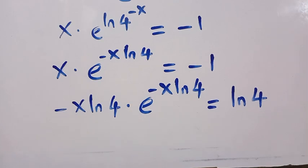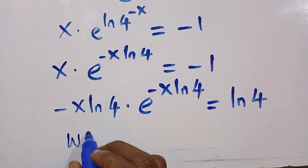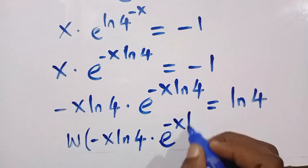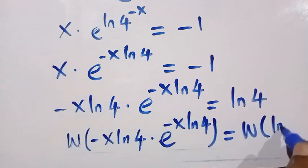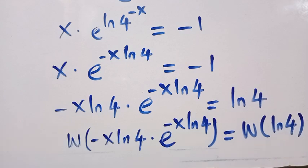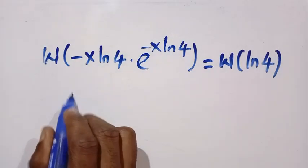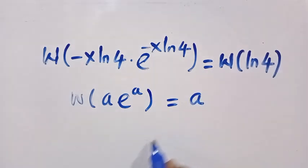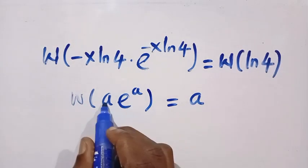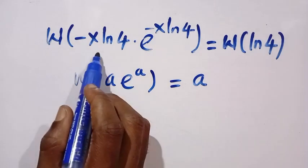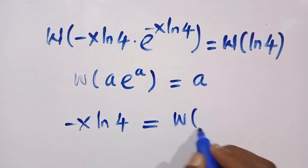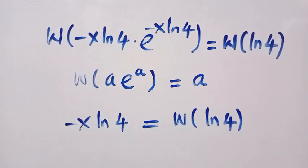Now we apply the Lambert W function to both sides: W of (minus x·ln 4). Using the identity W(a·e^a) = a, where the coefficient and the exponent must be the same, we identify a = minus x·ln 4. So minus x·ln 4 equals W of ln 4.